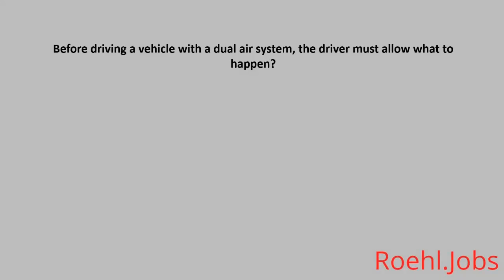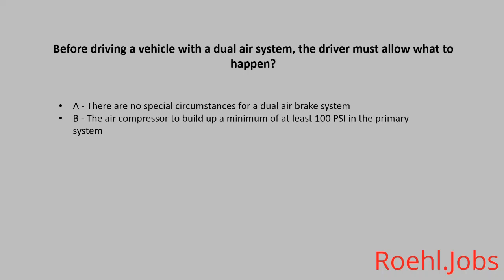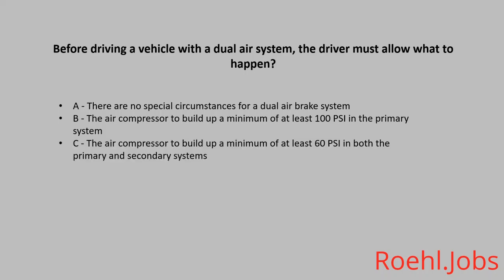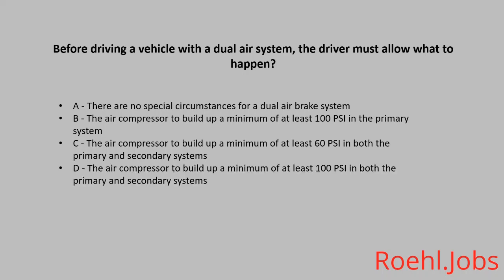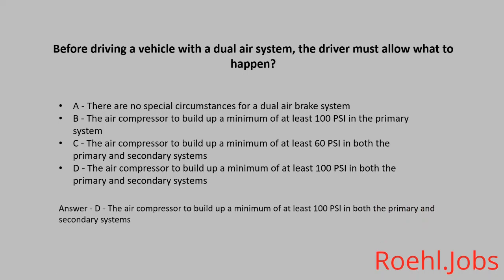Before driving a vehicle with a dual air system, the driver must allow what to happen? A. There are no special circumstances for a dual air brake system. B. The air compressor to build up a minimum of at least 100 PSI in the primary system. C. The air compressor to build up a minimum of at least 60 PSI in both the primary and secondary systems. D. The air compressor to build up a minimum of at least 100 PSI in both the primary and secondary systems. The answer: D.